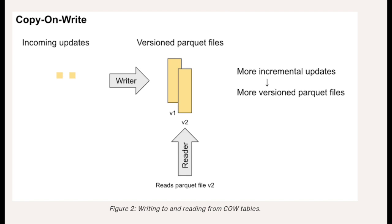First, let's talk about Copy on Write tables, also called COW. These tables are designed for scenarios where data immutability and versioning are paramount. Imagine a COW table as a repository where data is meticulously preserved. When you write new data into a COW table, instead of overwriting the existing data, Hudi creates a new version. This version history ensures that you have access to all past versions of your data, which is incredibly useful for tasks like auditing and compliance.